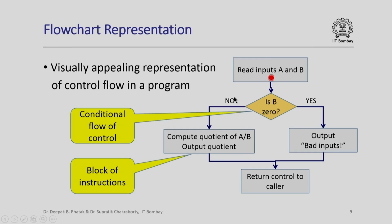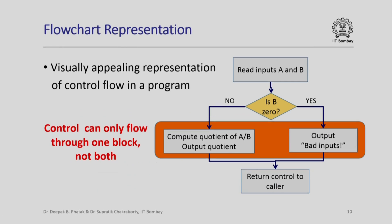Here is a quick animation of how control might flow if after reading the input, b was found to be non-zero, and here is another animation showing how control flows if b was found to be 0. Control can only flow through one of these two blocks, not both — this is a salient feature of conditional execution: depending on the condition, one block or the other is executed, not both.